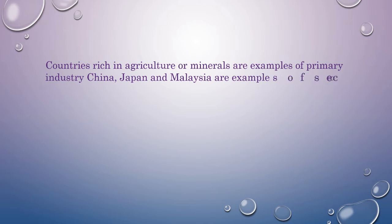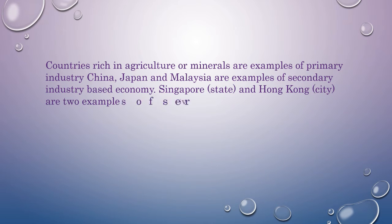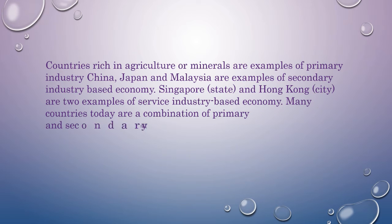Countries rich in agriculture or minerals are examples of primary industries. China, Japan, and Malaysia are examples of secondary industry based economies. Singapore and Hong Kong are examples of service industry based economies. Many countries today are a combination of primary, secondary, as well as tertiary industry based economies.